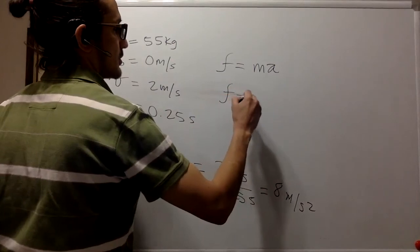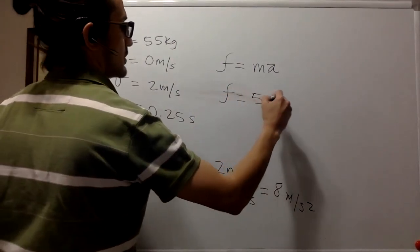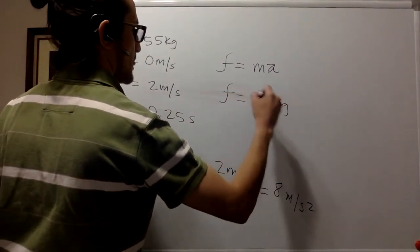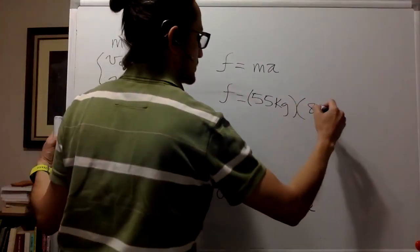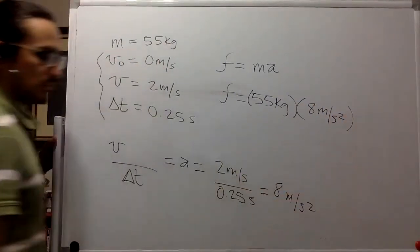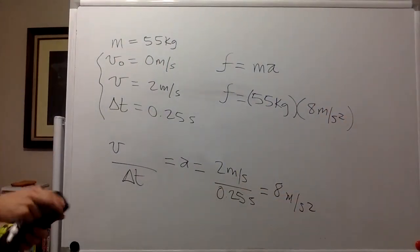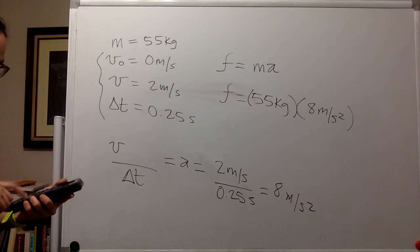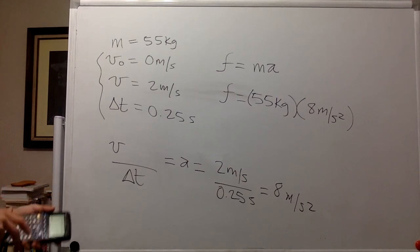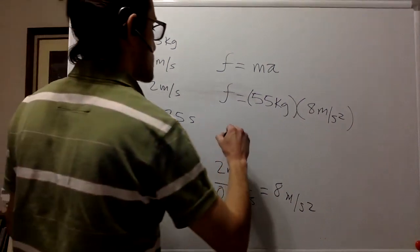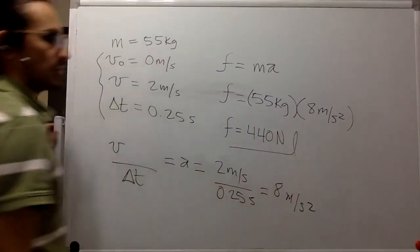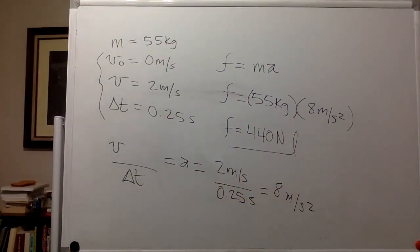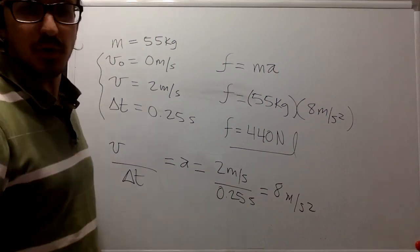So friction is going to be equal to 55 kilograms times 8 meters per second squared. That one is 440. So friction is 440 newtons and it is the force that is propelling the sprinter forward. So yeah, I hope you like the problem. Thank you.